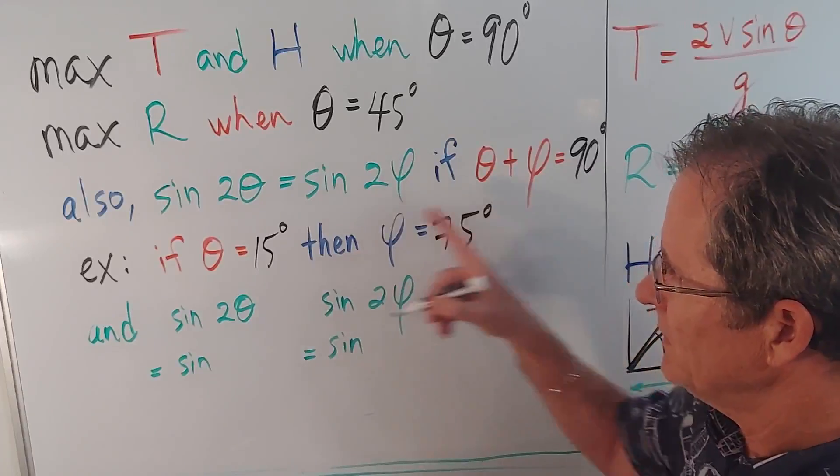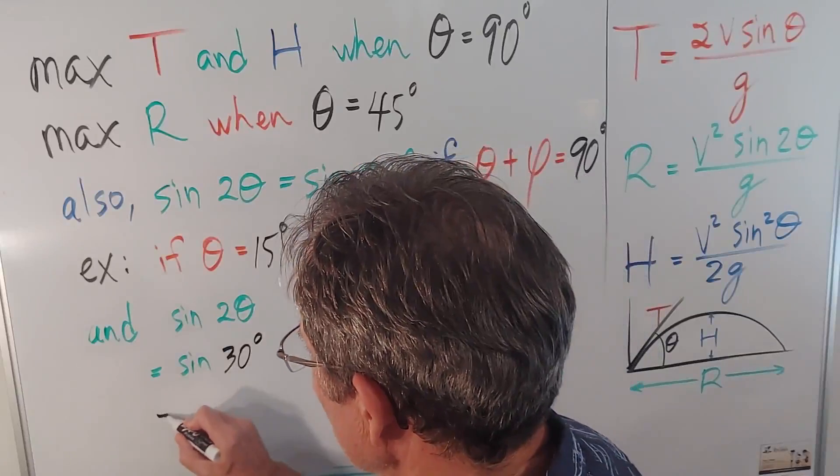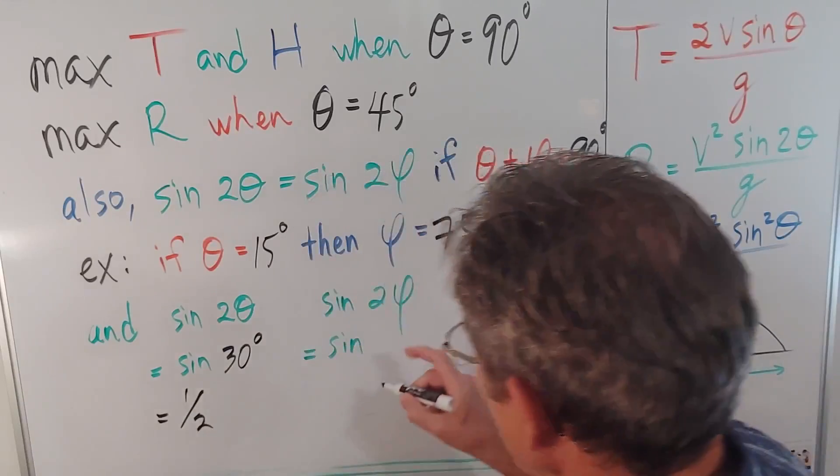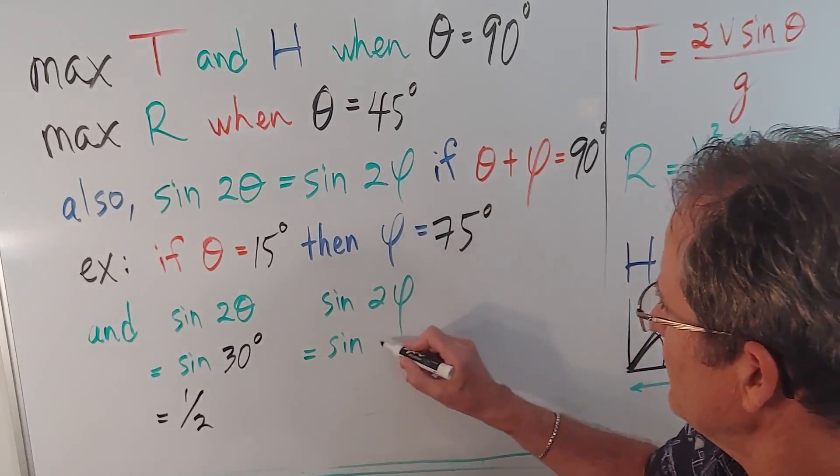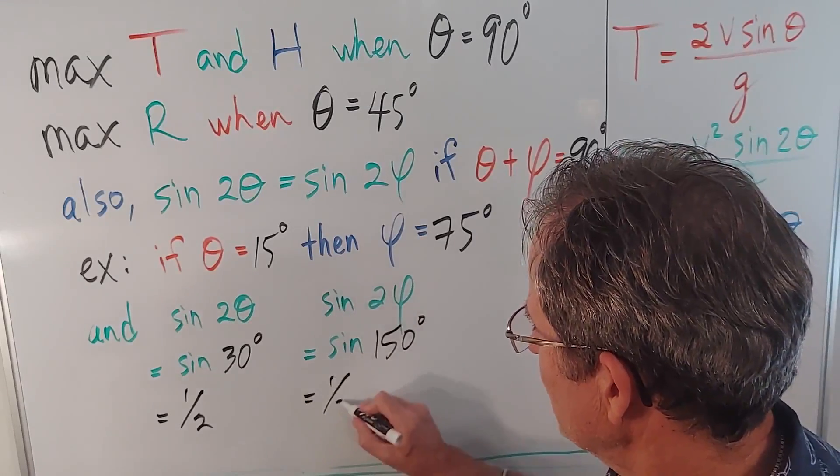Now, let's just verify that these are indeed equal. The sine of 2 theta would be the sine of 30, which we know to be 1 half. The sine of 2 phi would then be the sine of 150, which is also 1 half.